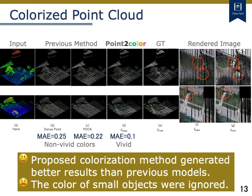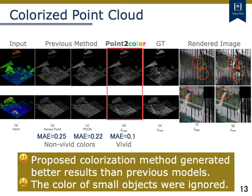I will introduce the colorized point cloud from our generator. We show some typical results including a building, the ground, and vegetation. The leftmost figure indicates input data. B and C indicate colorized points by previous studies. D is the colorized point cloud from our Point2Color. Our method generated more realistic colors than the previous methods. Comparing the ground truth color and the rendered image of the resulting output by our method, we can see that the generated colors were similar to that of the real image. However, the cars shown in red circles and the soil shown in blue were not reproduced well, because small objects tend to be ignored during the training process.